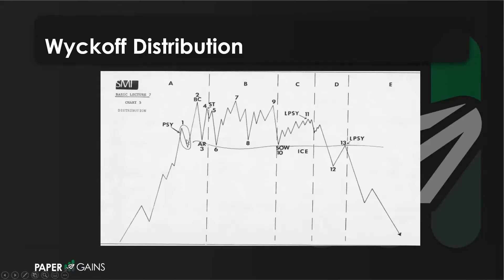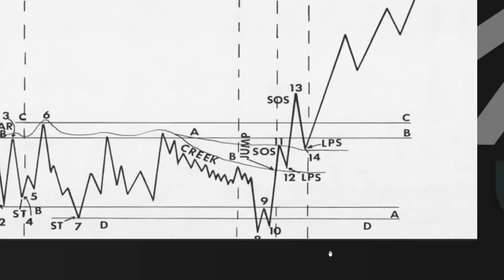Distribution is when you look for a stock or coin that's over-exceeding the market — if we're in a bull market and every other stock is doing well but there's one that's just crushing it, you know this thing's going to pull back eventually. So then you start putting your Wyckoff template on it, zoom into the daily, and see where your PSY is and your BC. This piece here — LPS — is part of the Wyckoff schematic.